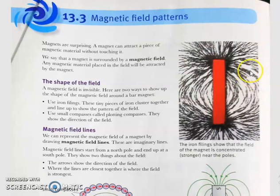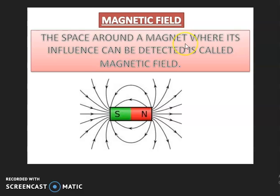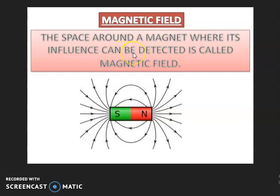When a magnetic material is within this field, even though the magnet is not touching it, the material will be attracted. The space around the magnet where its influence can be detected is called a magnetic field.